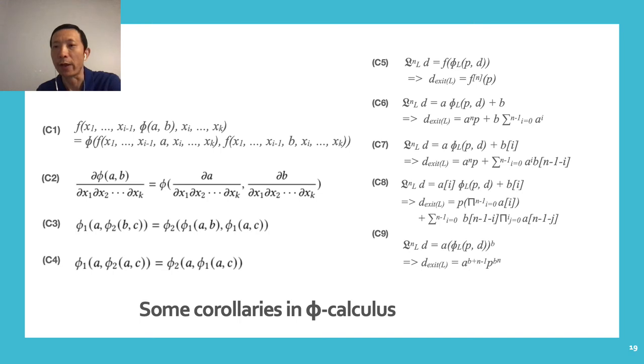From these fundamental formulae, we can derive these non-trivial corollaries. For instance, C2 is from the distributive formula. It says that the differentiation of a phi function can be computed by differentiating each of the arguments of the phi function.